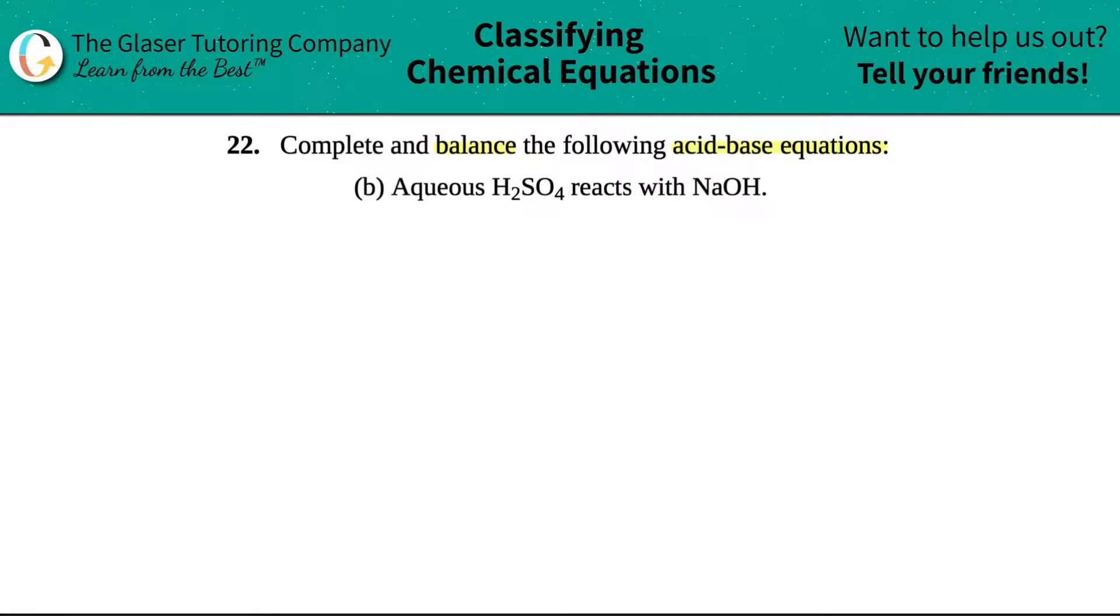Okay, so first off, memorize your strong acids and bases, right? There's six of each. On that list, H2SO4 is on there. So I know that H2SO4, especially because it has a hydrogen in the front, that this is a strong acid. And likewise, on your six strong bases, NaOH is a strong base.